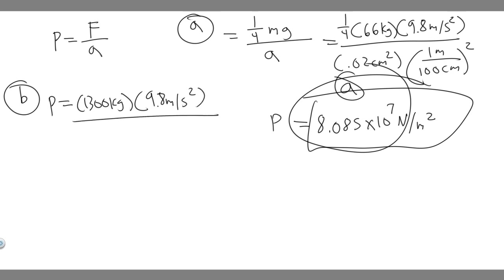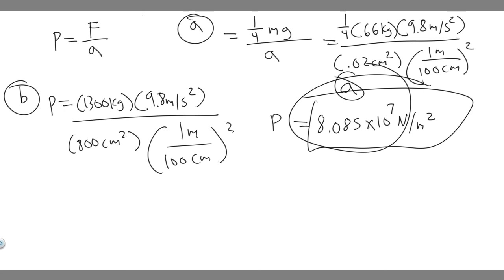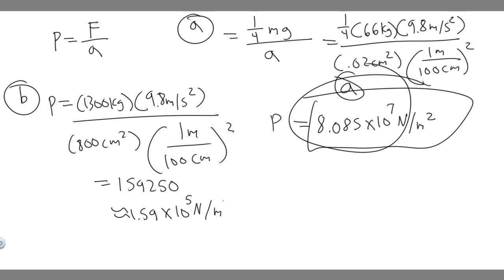Then we divide, and keep in mind this area is also given in centimeters squared, so we have to convert to meters squared. We have 800 centimeters squared. Same conversion: 1 meter over 100 centimeters, squared — the centimeters squared cancel and we're left with meters squared. So do 1300 times 9.8, then divide by 800 multiplied by 1 over 100 squared. You get 159,250, which is approximately 1.59 × 10⁵ N/m².